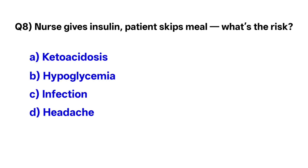Question number eight: A nurse gives insulin but the patient skips meals. What is the risk? The correct option is B, hypoglycemia.